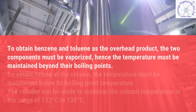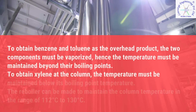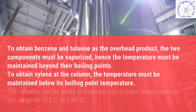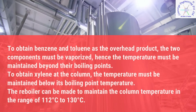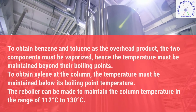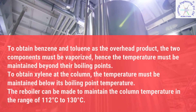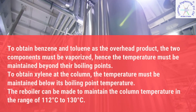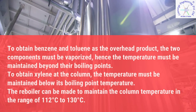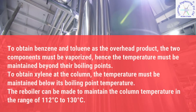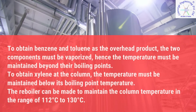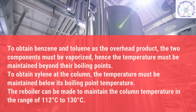To obtain benzene and toluene as the overhead product, the two components must be vaporized, hence the temperature must be maintained beyond their boiling points. To obtain xylene at the bottom of the column, the temperature must be maintained below its boiling point temperature. The reboiler can be made to maintain the column temperature in the range of 112°C to 130°C.